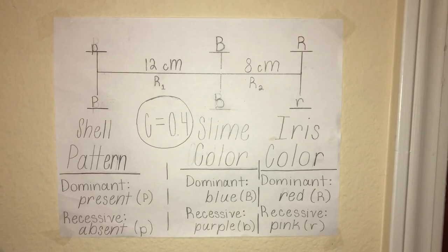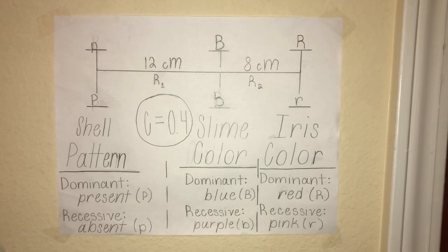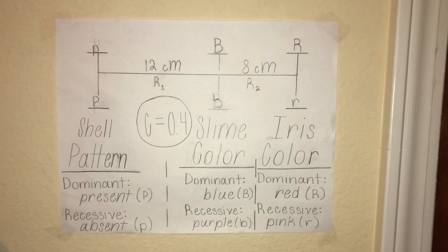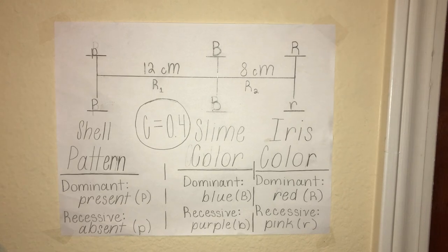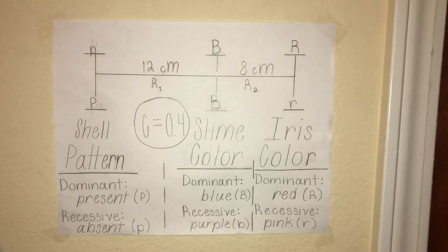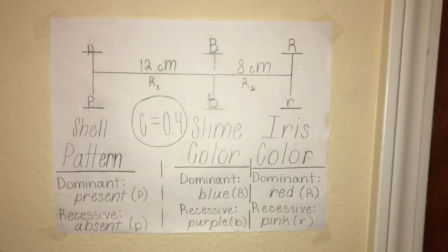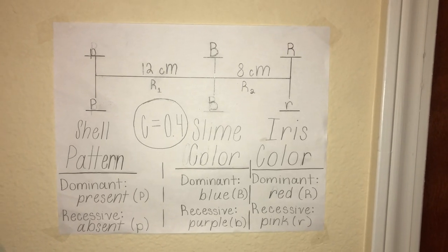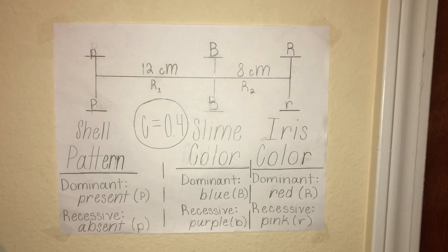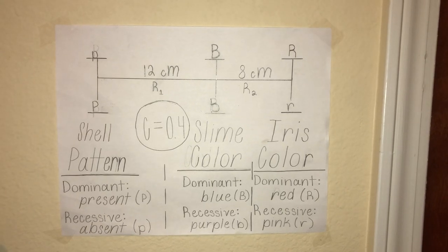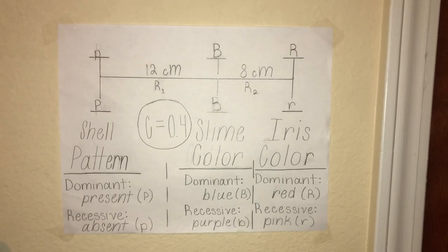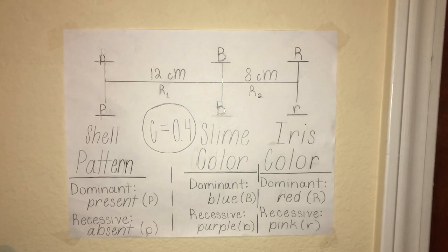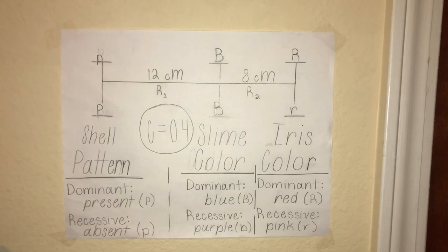Today we will be looking at the genetic map for a snail heterozygous for three different traits: shell pattern, dominant present to recessive absent; slime color, dominant blue to recessive purple; and iris color, dominant red to recessive pink.